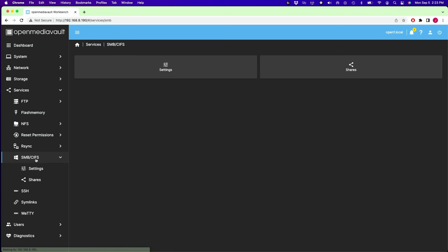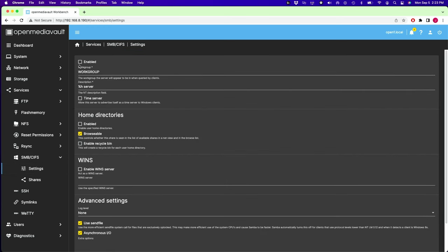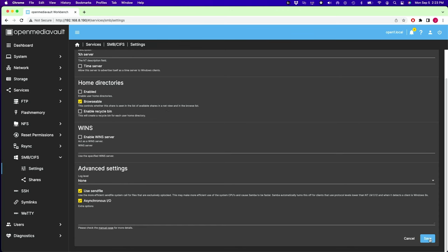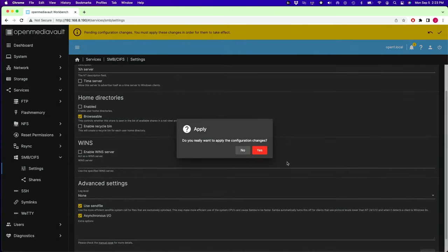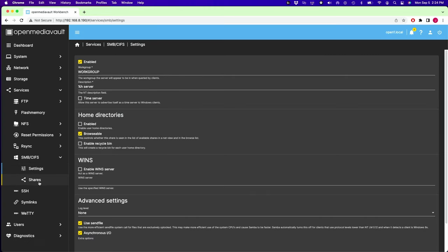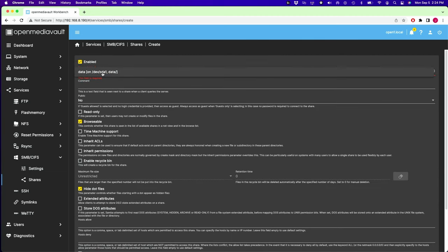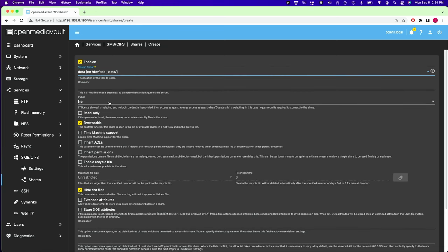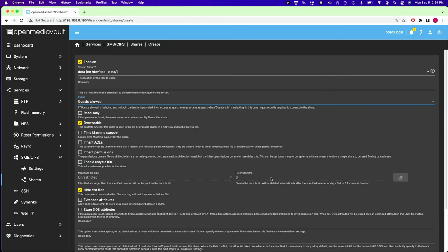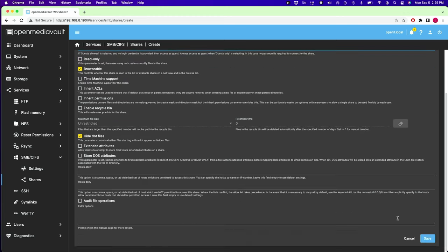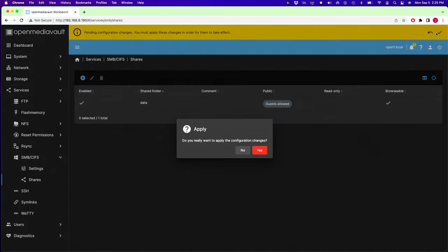Next, we'll click on services. So we have our shared folder, but it's not available on our network yet. And for that to happen, we have to enable it in Samba. So we're going to scroll down to SMB CIFS. Click on that. Click settings. And click enabled. And so the work group is your local windows group. Scroll down and click save. And then checkmark and yes. So now we want to share our folder. So we'll click on shares. And then the plus mark. And so it's enabled. We're going to click on our share that we created. Click on public. And we're going to say guests allowed. Again, to make it as easy as possible to use on our local network. Scroll down and click save. And then checkmark. And yes.